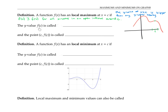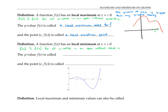The y value f of c is called a local maximum value for f, and the point with coordinate c, f of c is called a local maximum point. A function f of x has a local minimum at x equals c if f of c is less than or equal to f of x, for all x values in an open interval around c. The y value f of c is called a local minimum value, and the point with coordinate c, f of c is called a local minimum point.